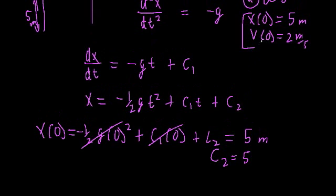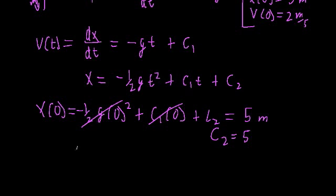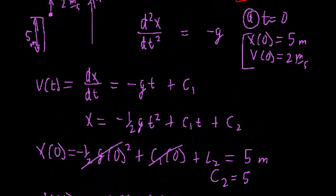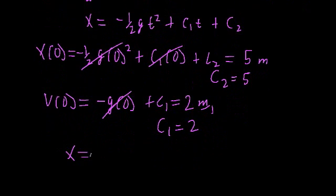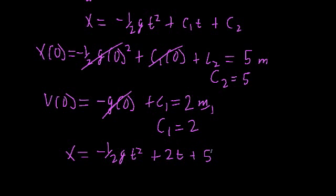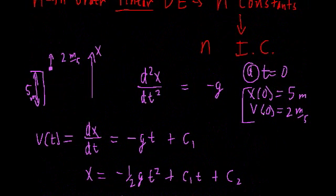Now we plug in our second initial condition: the velocity at t equals zero. The velocity is just the derivative of x, so v of t equals dx/dt. Evaluating at t equals zero: v at zero equals negative g times zero plus c1, and that equals two meters per second. The first term is zero, so c1 equals two. Plugging in our arbitrary constants, we get x equals negative one-half g t squared plus two t plus five, and there we've solved the original differential equation and applied our initial conditions.